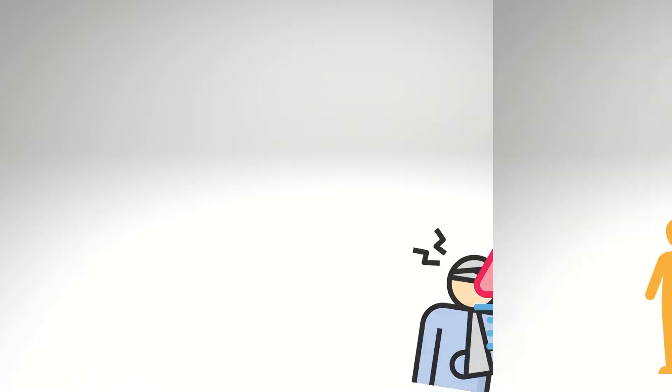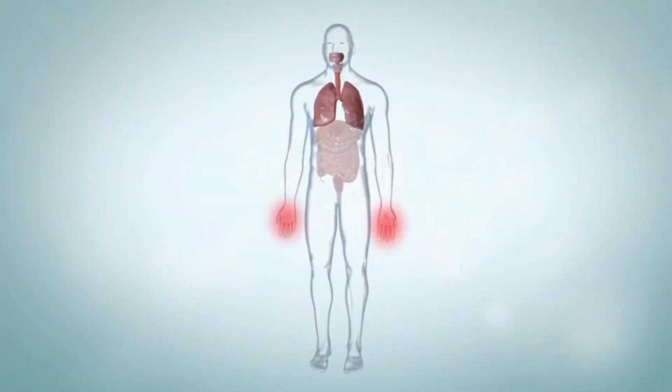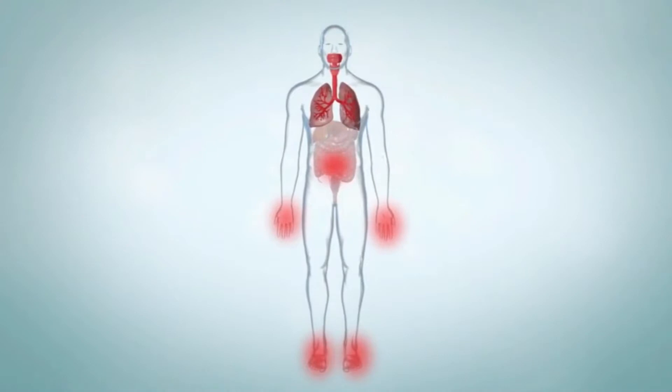Angioedema can run in families. This is called hereditary angioedema. This form of angioedema is rare, but it's often more serious than other types. It usually involves the hands, feet, gut, and airway.